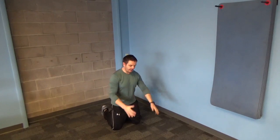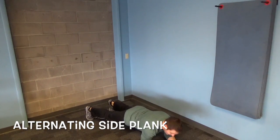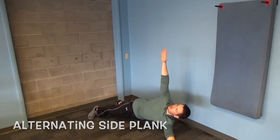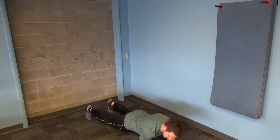Third exercise we're going to do is called an alternating side plank. So we're going to begin in a plank position, and from here we're going to come up with one side, reaching towards the ceiling, come back down slowly,